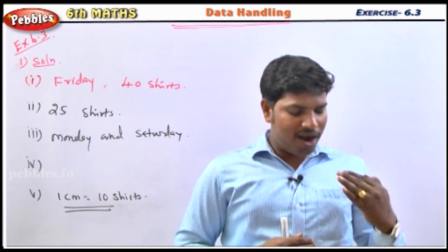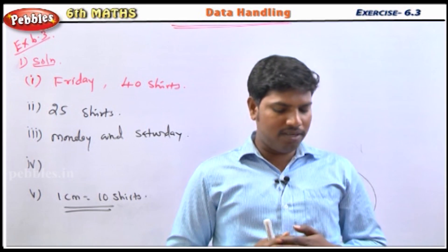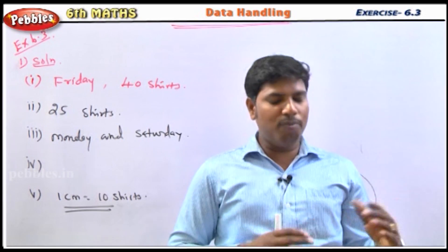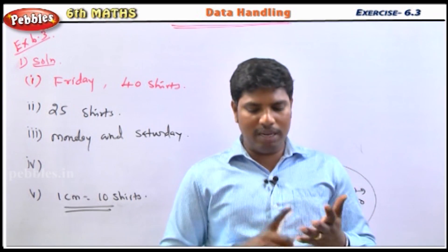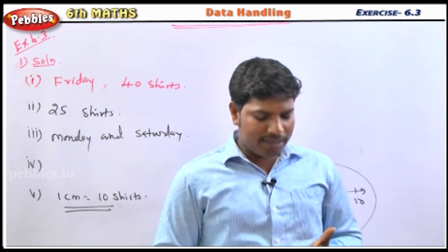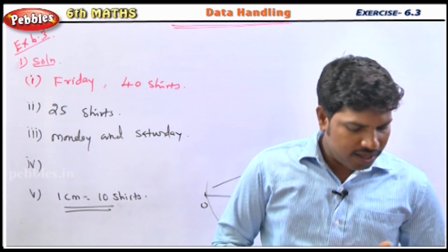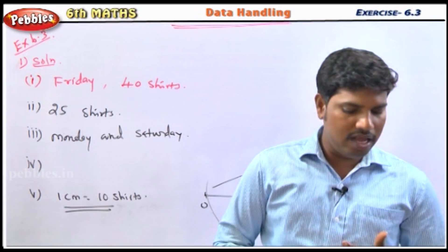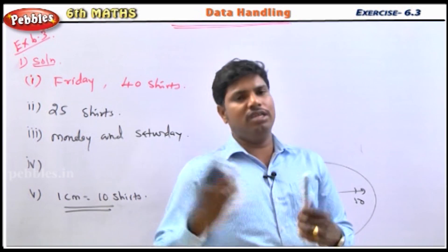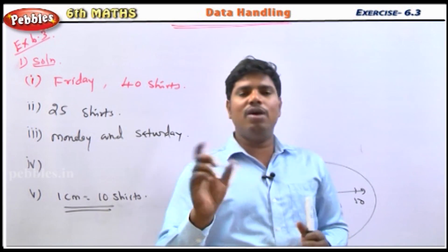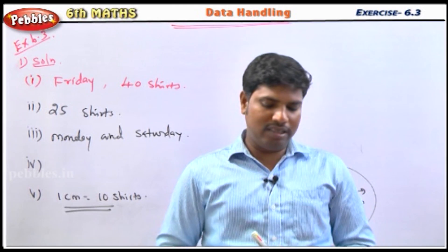The fourth question: what is the total marks scored by the student in both languages together? The two languages are Tamil and English. Tamil score is 70, English score is 60. Adding them: 70 plus 60 equals 130. So the total marks in both languages together is 130 marks.